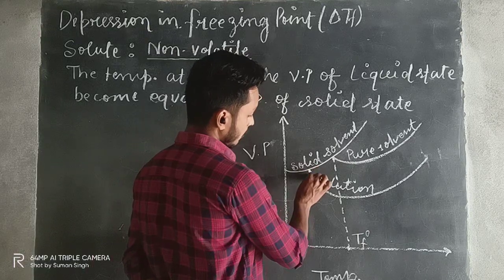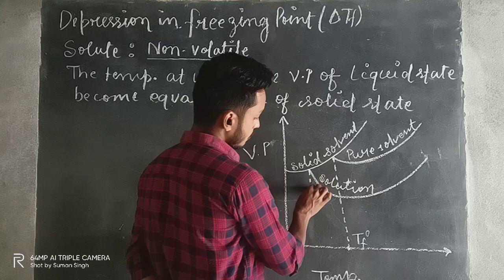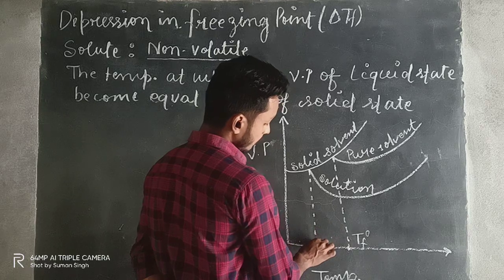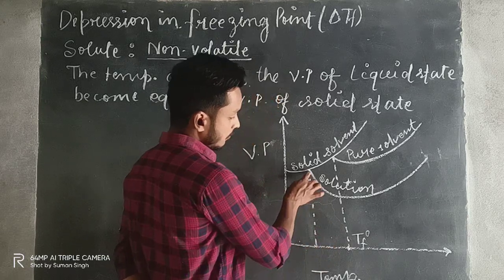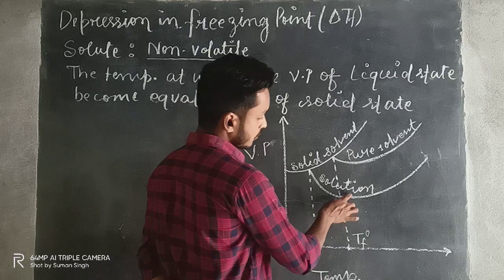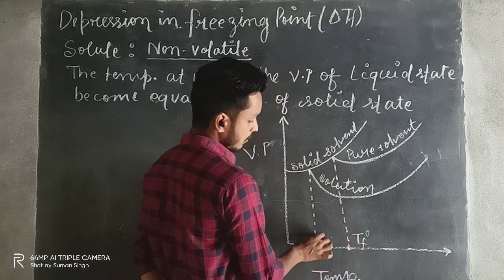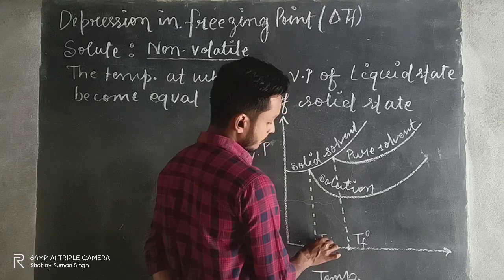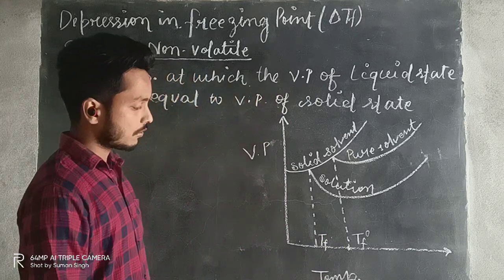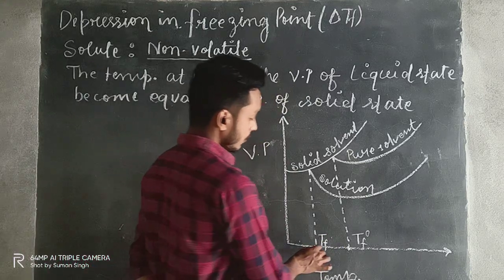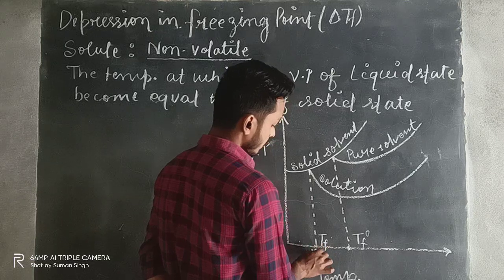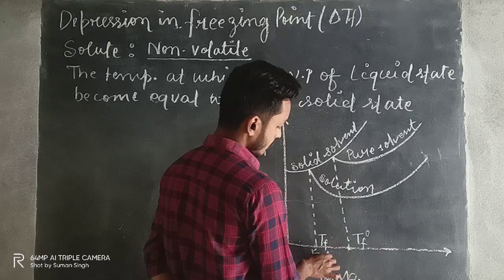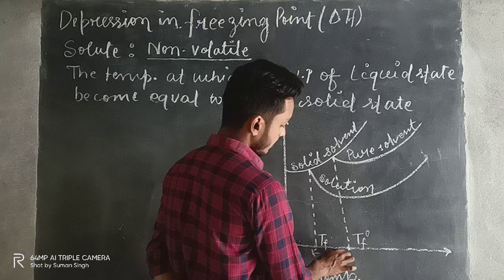So when the freezing point is decreasing, this new temperature is where the solution will freeze — it is denoted by TF. And the difference between these two temperatures is denoted by delta TF.